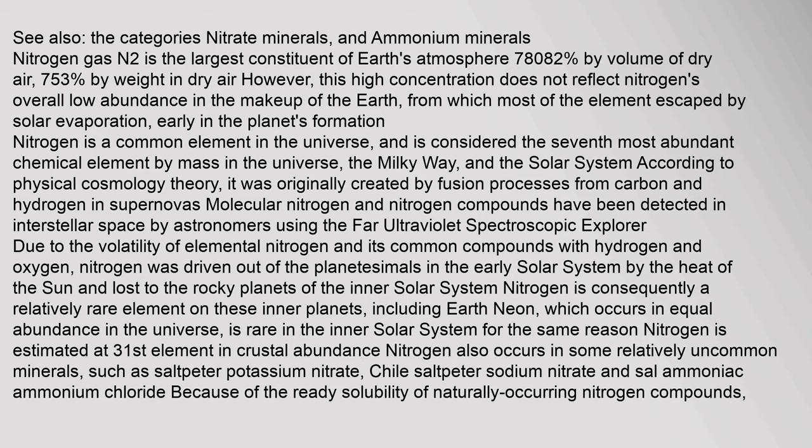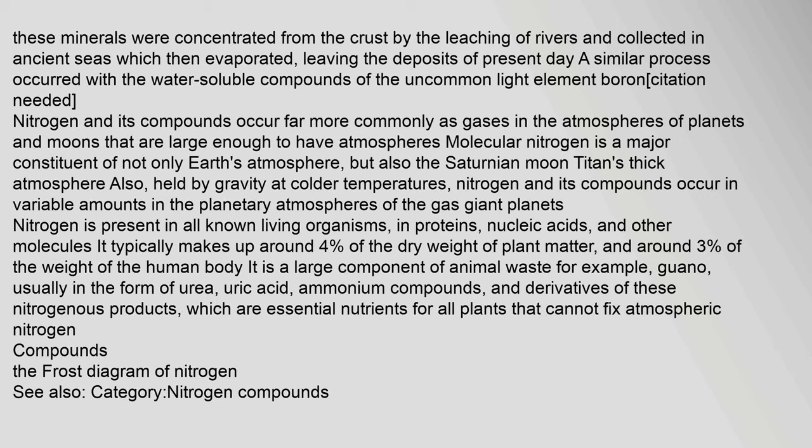Molecular nitrogen and nitrogen compounds have been detected in interstellar space. Due to the volatility of elemental nitrogen and its common compounds with hydrogen and oxygen, nitrogen was driven out of the planetesimals in the early solar system by the heat of the sun and lost to the rocky planets of the inner solar system. Nitrogen is consequently a relatively rare element on these inner planets, including Earth. Nitrogen is estimated to be the 31st element in crustal abundance. Molecular nitrogen is a major constituent of not only Earth's atmosphere, but also the Saturnian moon Titan's thick atmosphere.